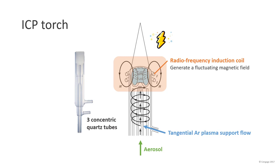The ionization of the flowing argon is initiated by a spark from a Tesla coil. When the resulting ions and electrons flow through this region, they interact with the fluctuating magnetic field. This interaction causes the ions and the electrons within the coil to flow in the closed annular paths as shown here.